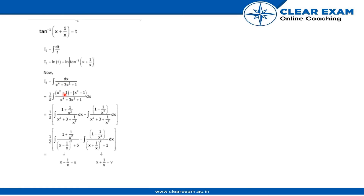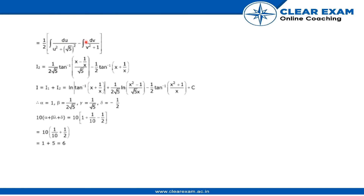For I2, we add and subtract (x² + 1) and (x² - 1), putting 2 in the numerator with a factor of 1/2 outside. We then separate the denominator across the two numerator terms. Letting u = x - 1/x for one part and v = x + 1/x for the other, and simplifying, we find I2 = (1/(2√5)) · tan⁻¹((x - 1/x)/√5) − (1/2) · tan⁻¹(x + 1/x).